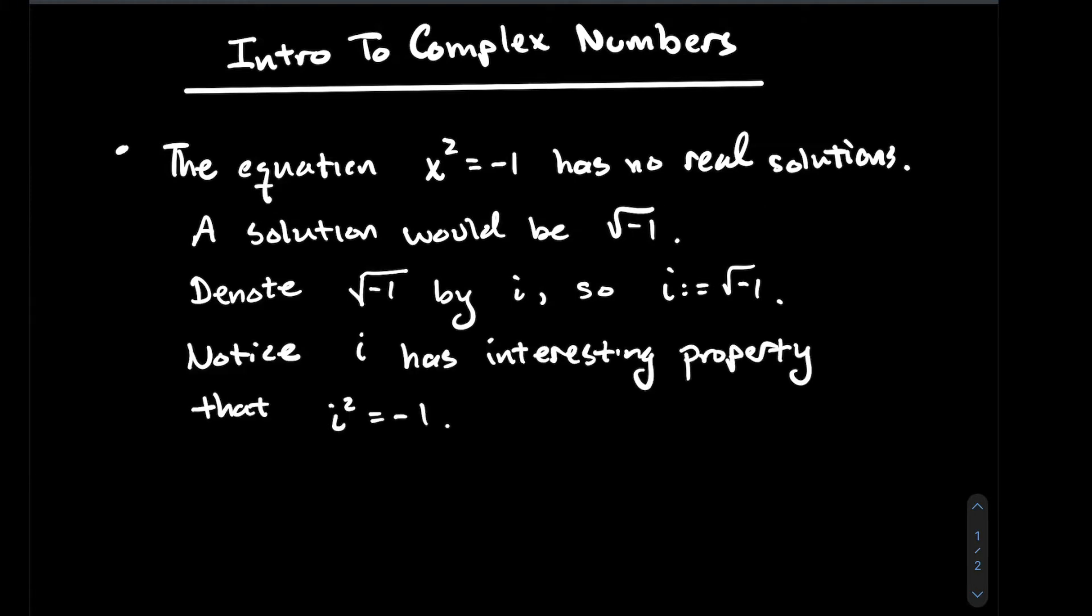Notice that this i has an interesting property: when you square both sides of our definition, you see that i squared gives you back negative 1.